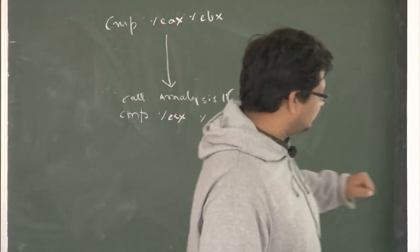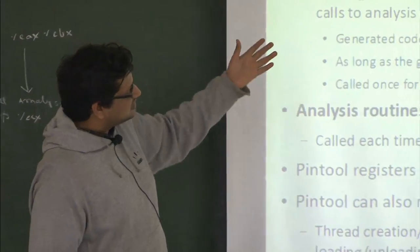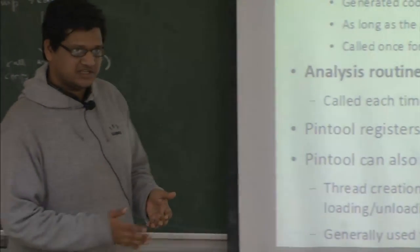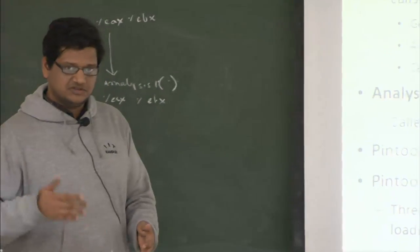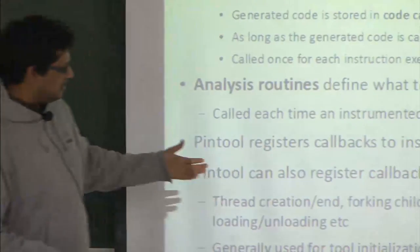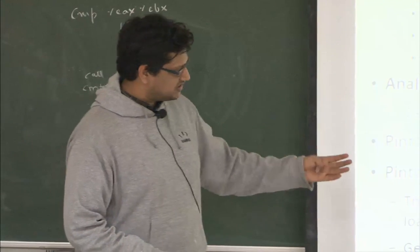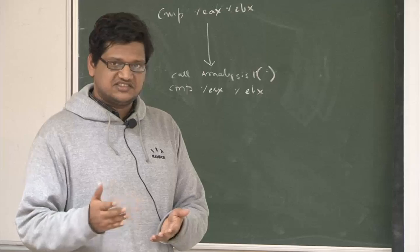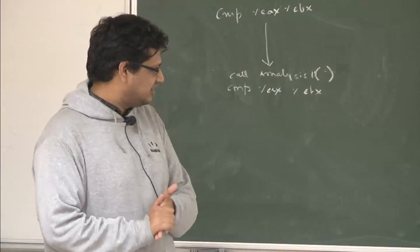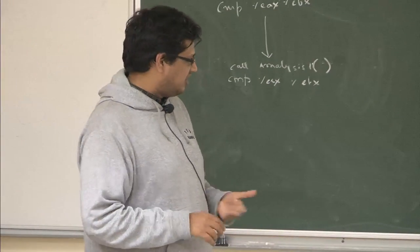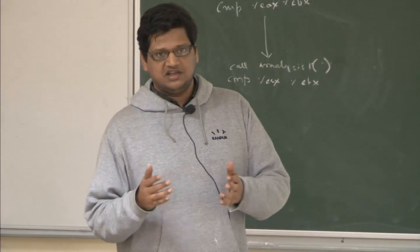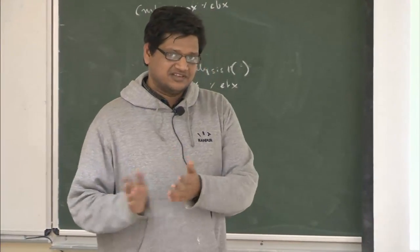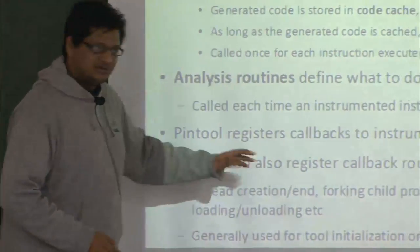A PIN tool also registers which instrumentation routine PIN should call — it registers a callback for instrumentation. PIN tools can also register callbacks for notification events such as thread start, thread end, forking a child process, application end, and image loading/unloading. An image here refers to a binary file (e.g., a dynamic library) that has been loaded.